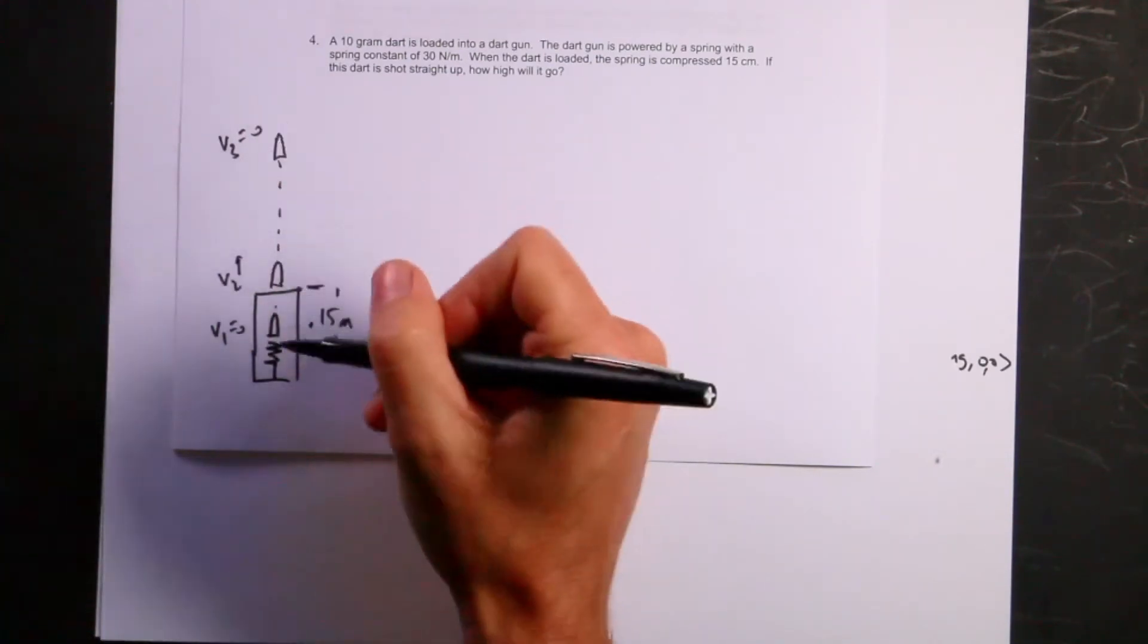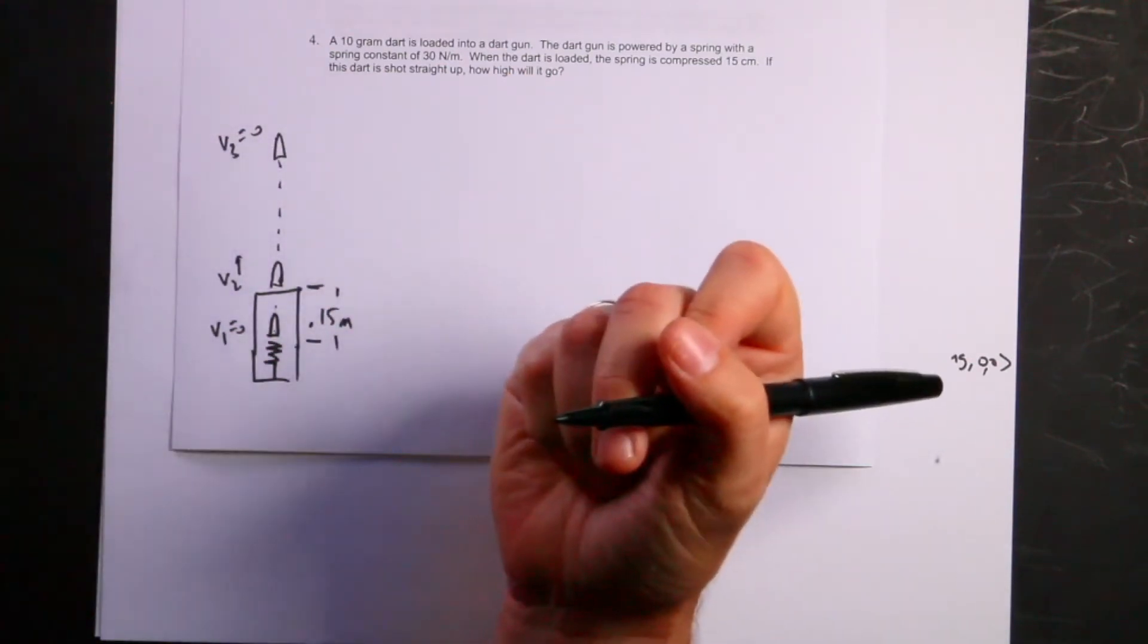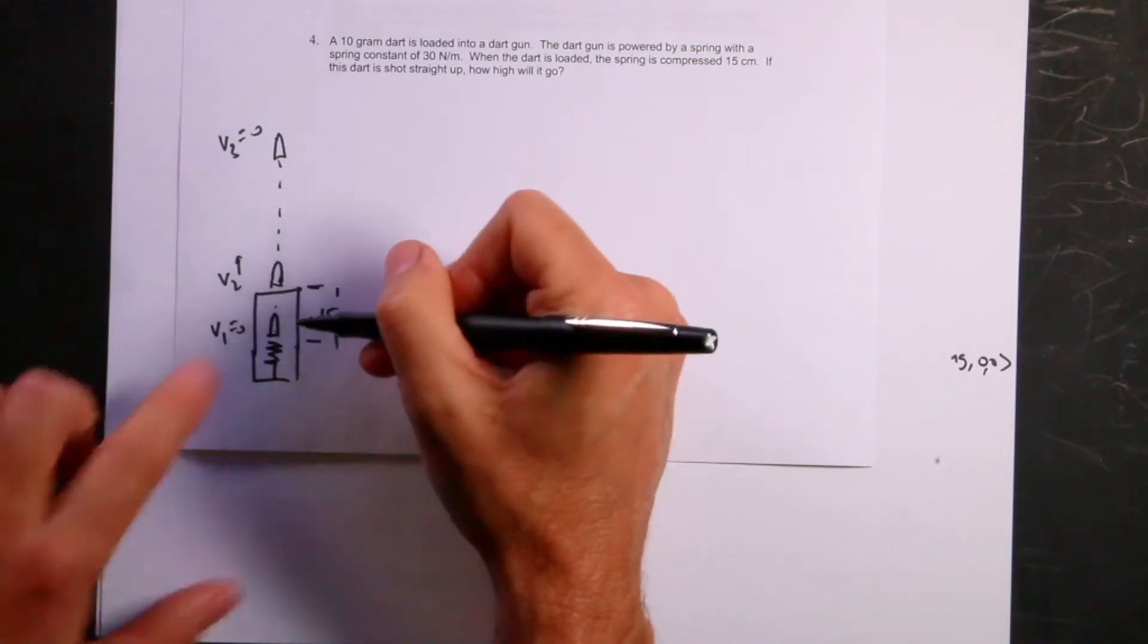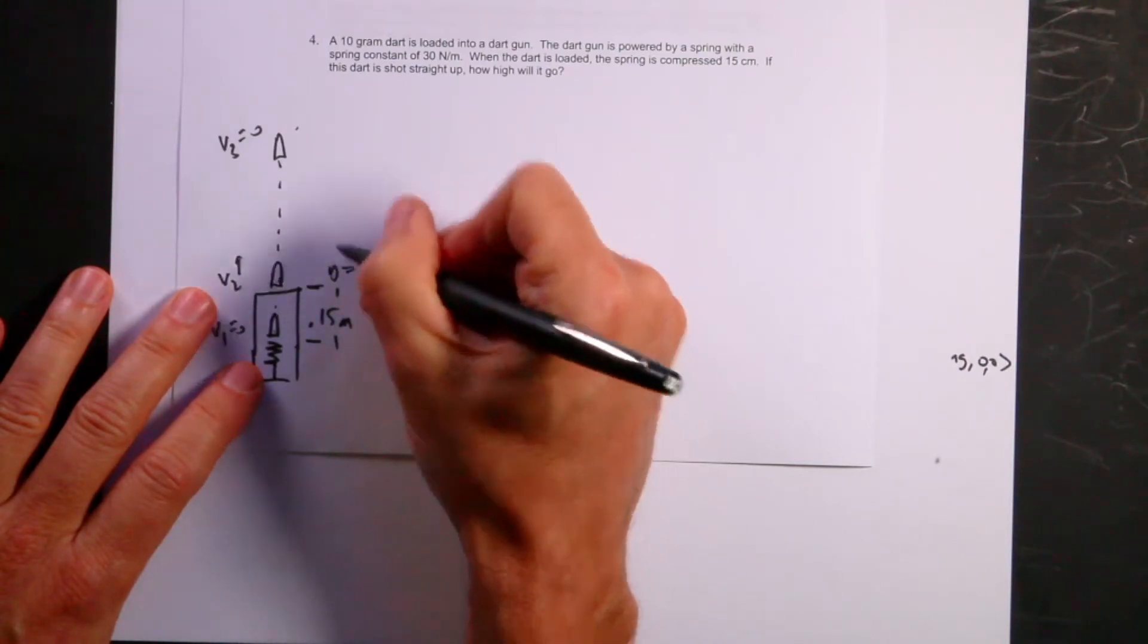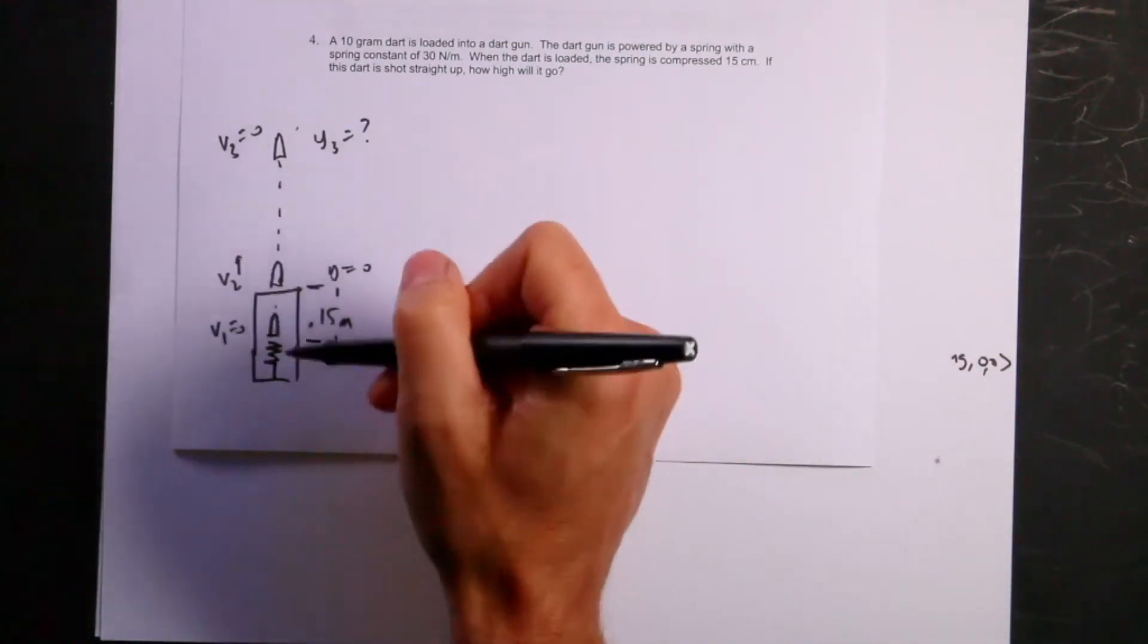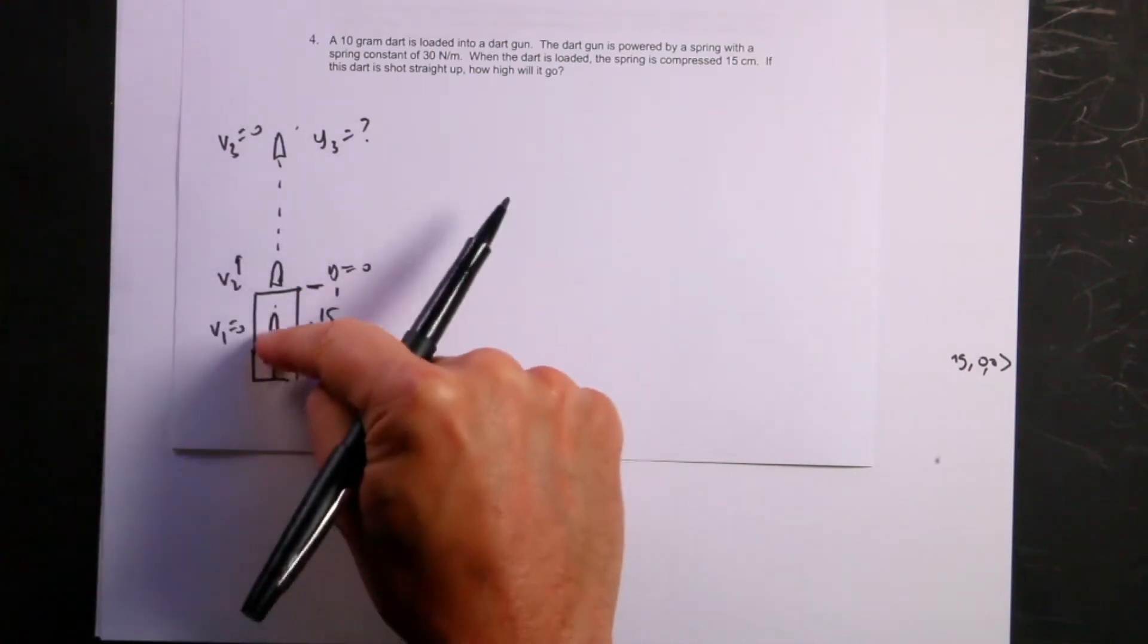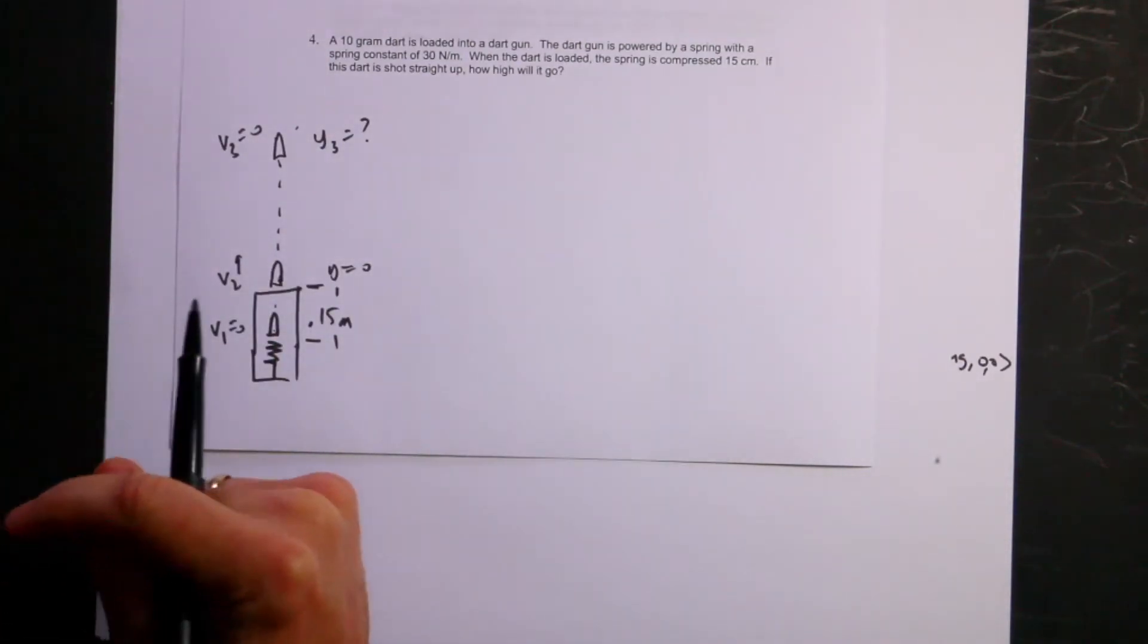So we actually have three stages. It starts from rest, speeds up to here, and then moves up here under the influence of gravity. How high would it go is ambiguous, because how high from where? Is it the distance from here to there, or from here to there? I'm going to say this is Y equals 0, and I want to find Y3. However, if a student did it either way on the problem, I hope 2007 Rhett Elaine would still give the student credit. If I took off points because they interpreted the question wrong, then I'm a bad person.